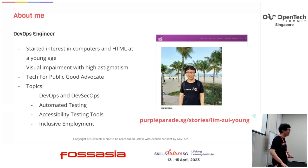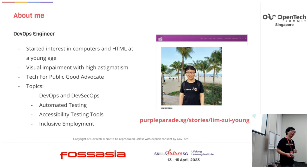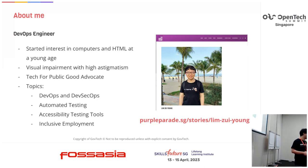A bit about myself — I'm an engineer at Carcatech. I've been working with computers since I was in primary school, and I have a visual impairment. One of the reasons why I'm working in accessibility is so that I hope the services we build can be more inclusive and accessible.